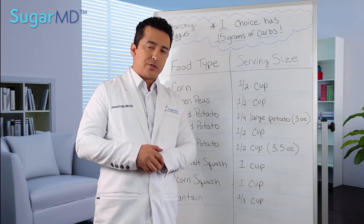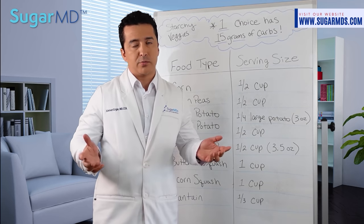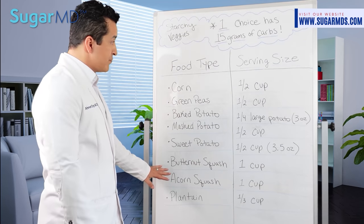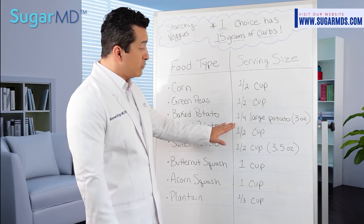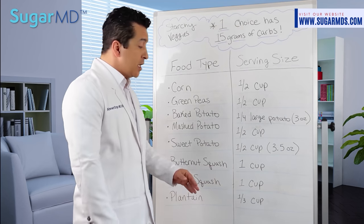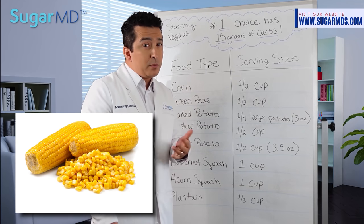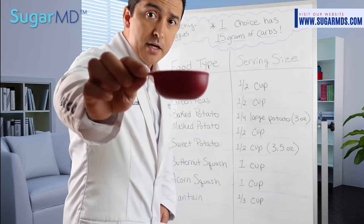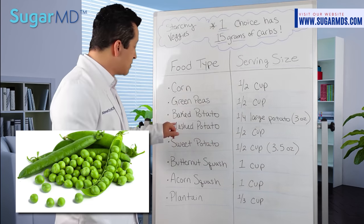Now let's talk about vegetables — starchy and non-starchy. For starchy vegetables: half a cup of cooked corn is 15 grams. Here's your half cup — that's your half cup of corn at 15 grams. Half a cup of green peas is also 15 grams.